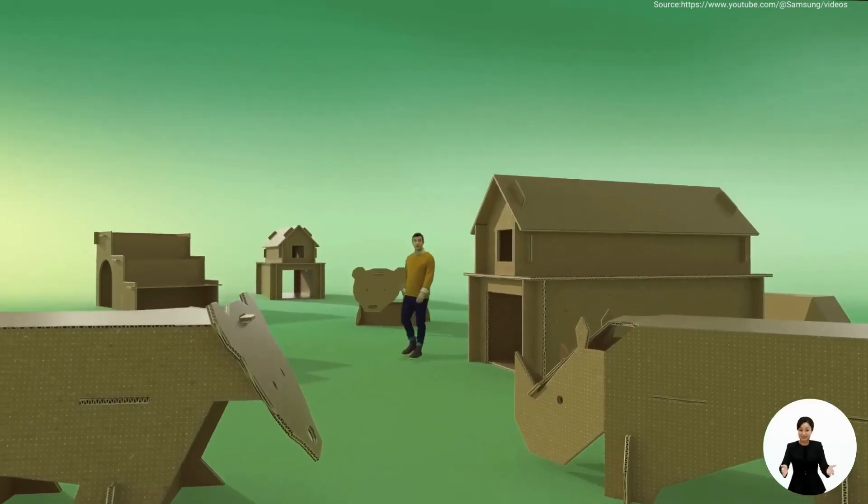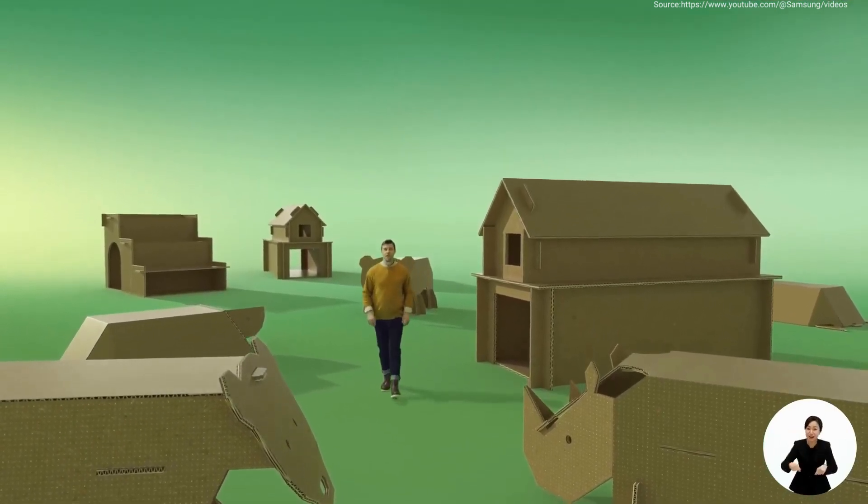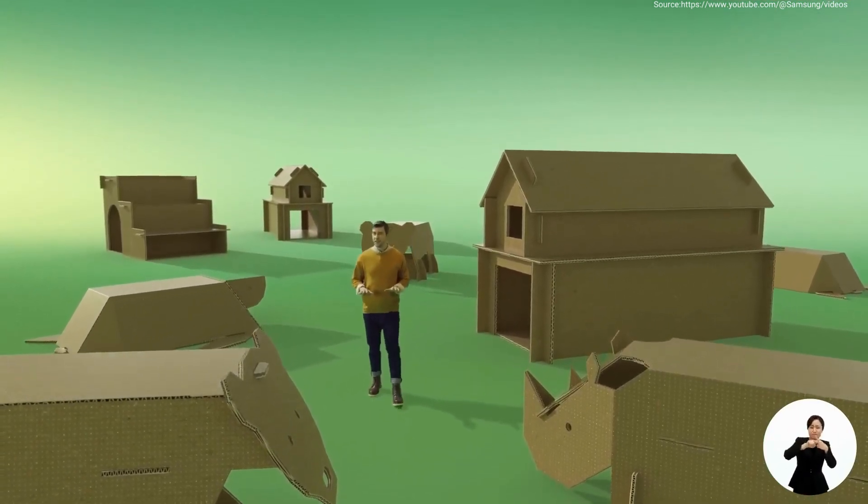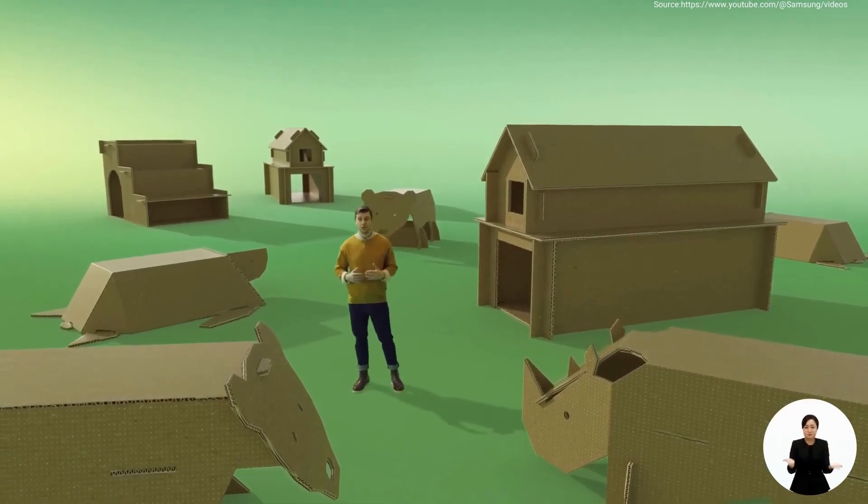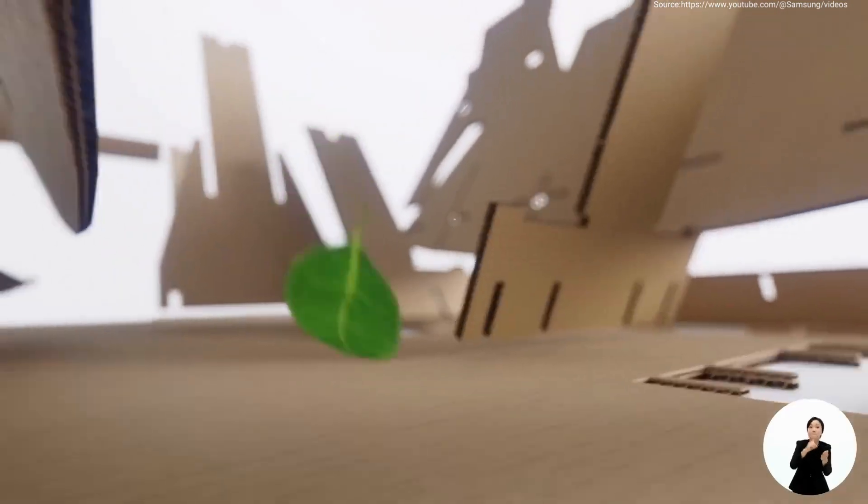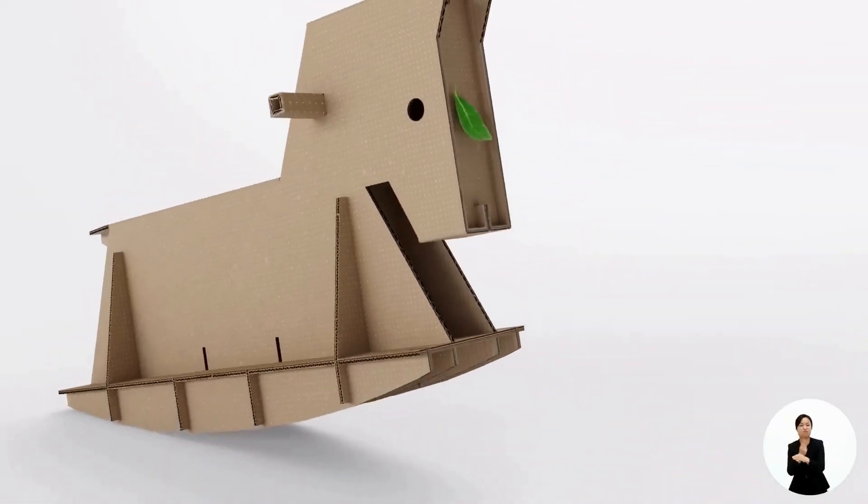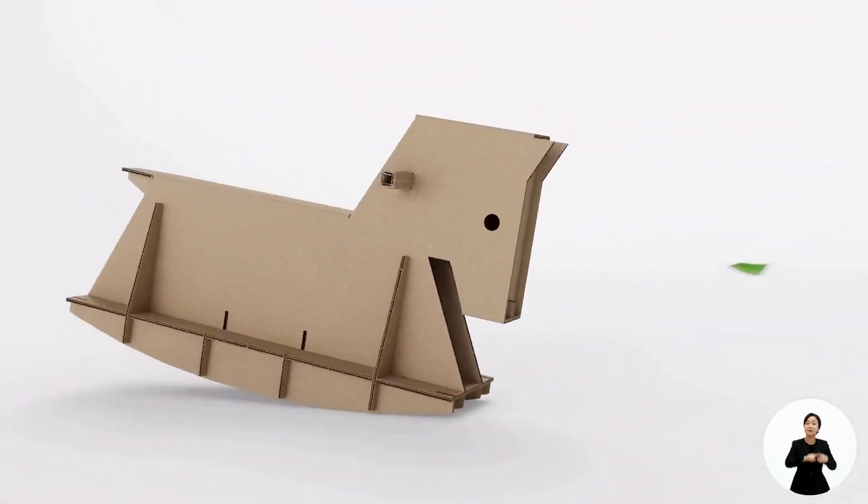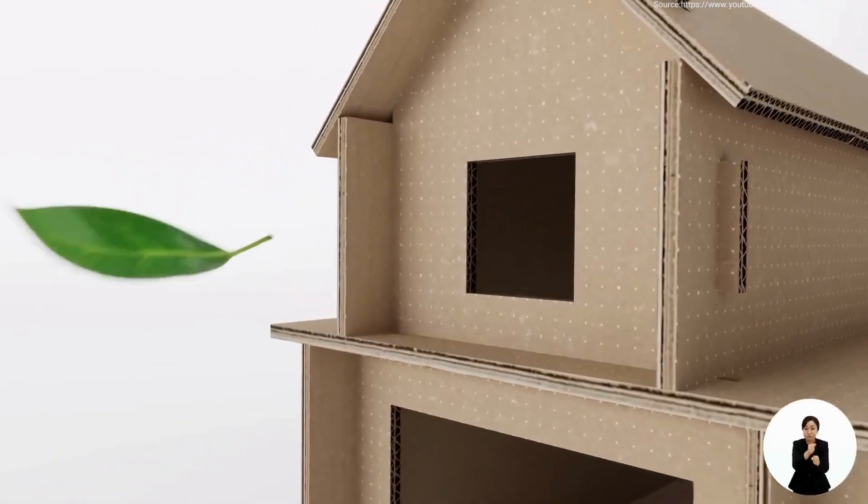Our cardboard boxes can be reused too. We created our eco packaging with dotted lines that can be folded into different household items. It's like origami, but more practical. By building sustainability into the product manufacturing and experience, we can help many of our users to contribute to building a healthier planet for future generations.